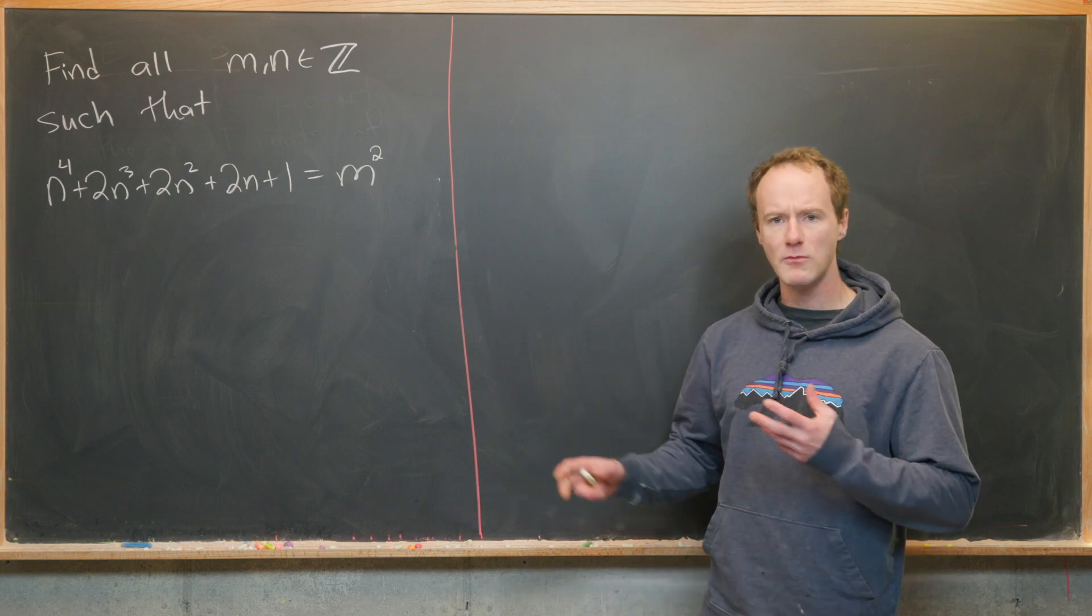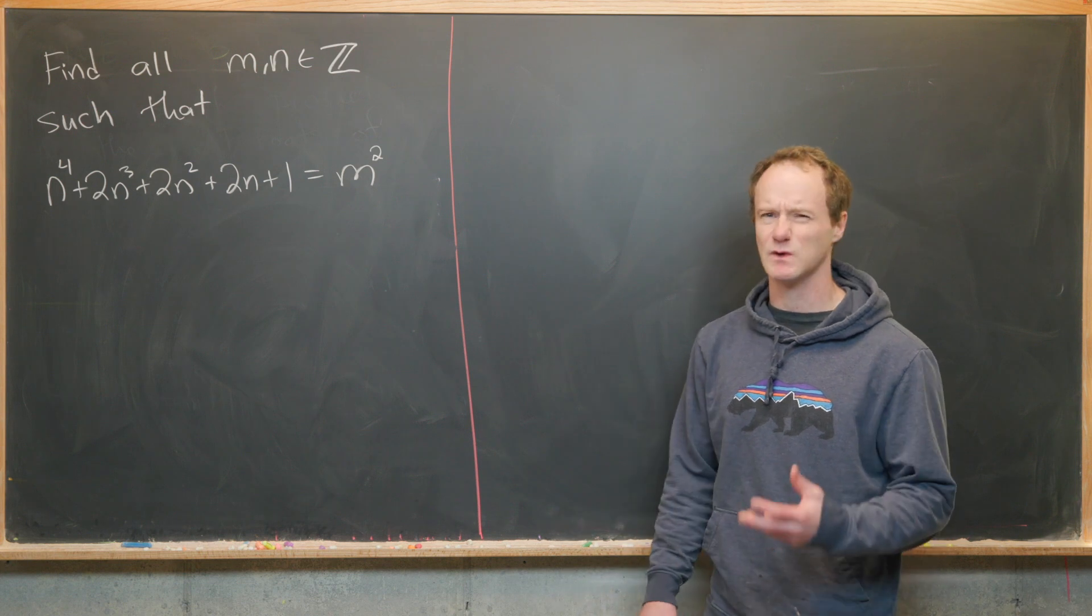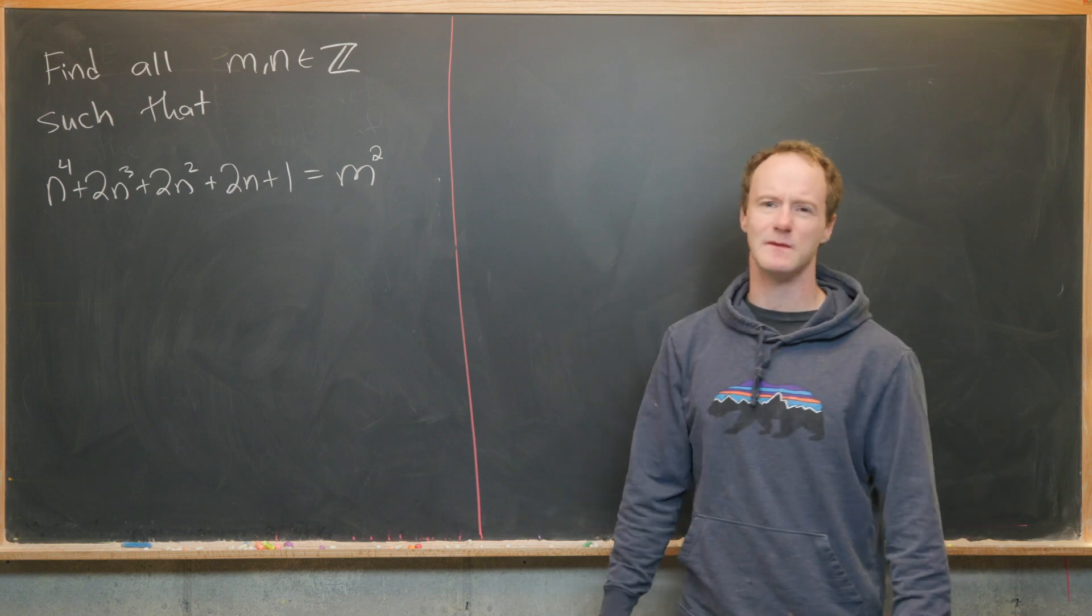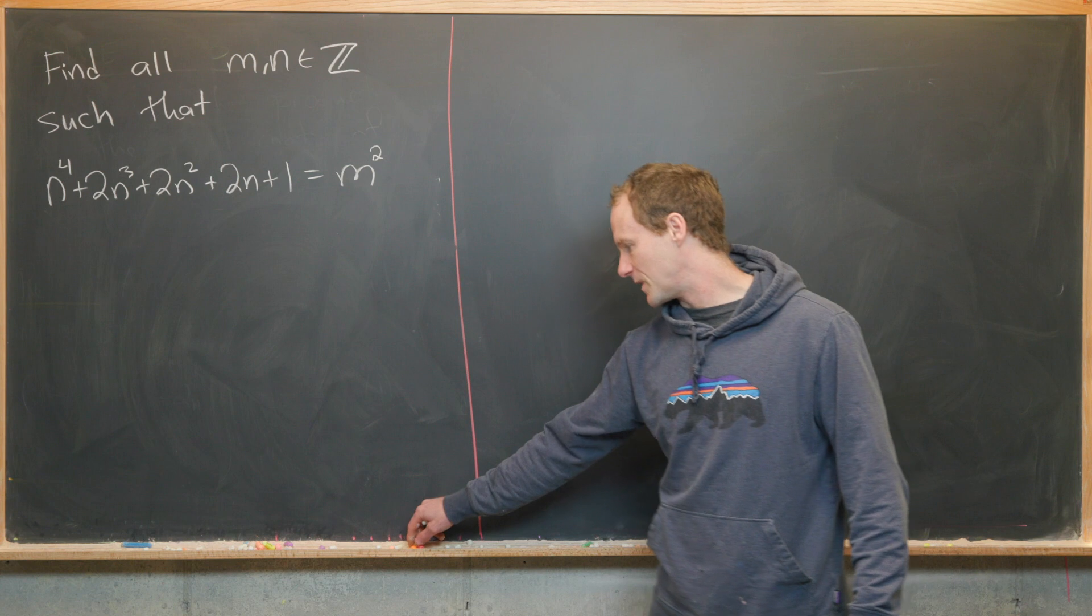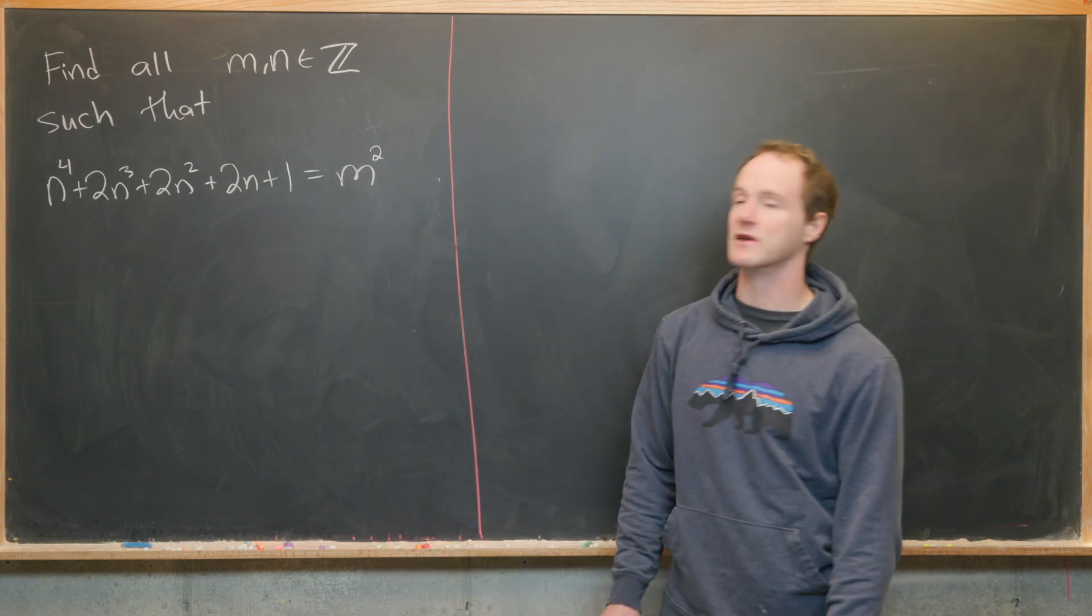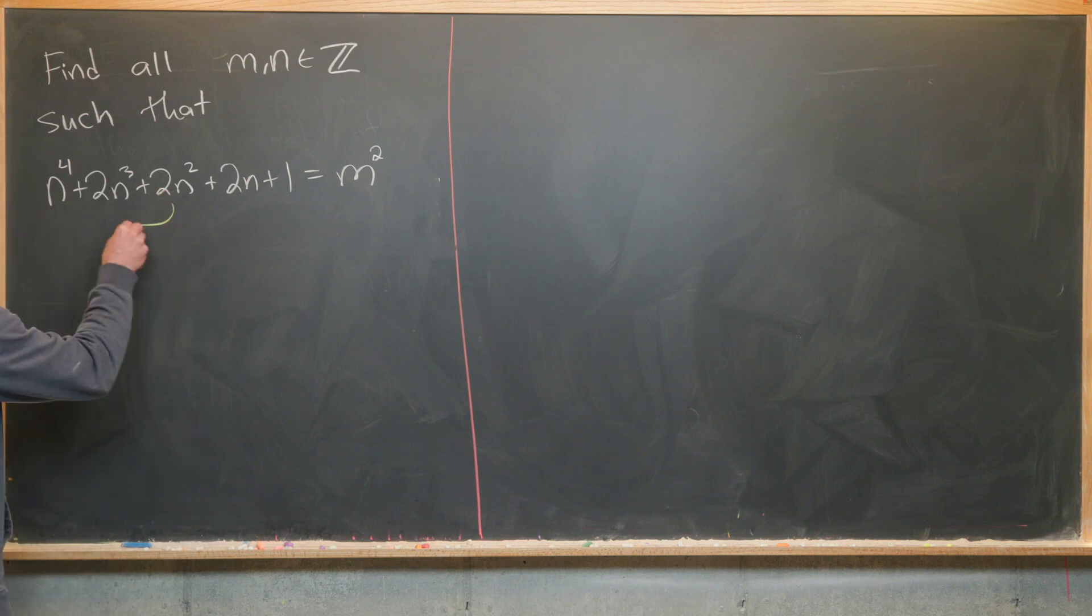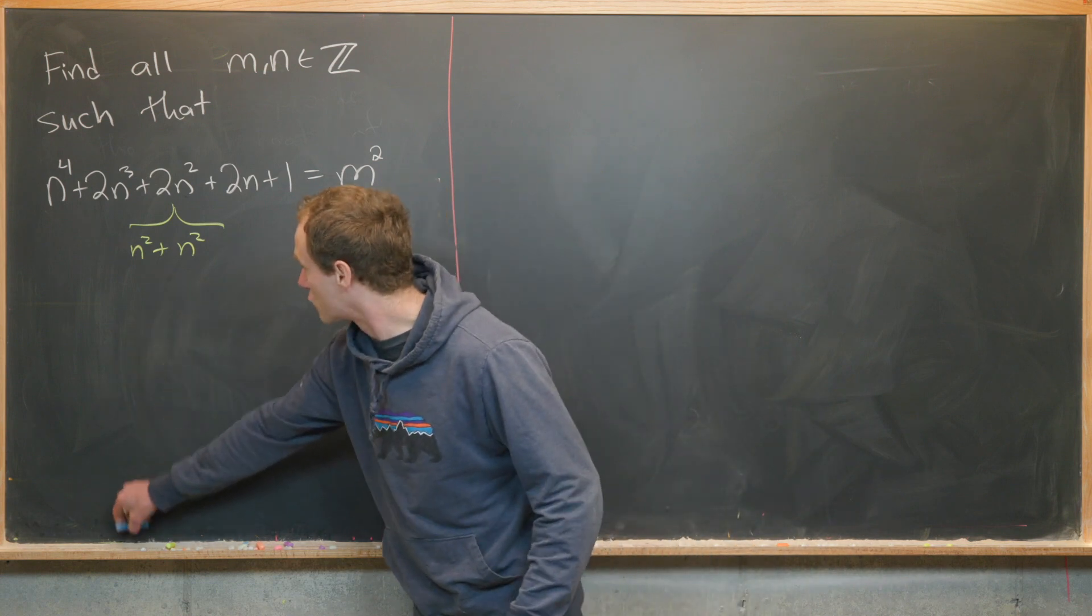Notice it almost looks like a perfect square binomial like n plus 1 squared, because we've got this coefficient of 2 in the middle, but we've got three coefficients of 2 in a row. But we can use that to our advantage by taking this 2n squared and rewriting it as n squared plus n squared. Now we can do some grouping.